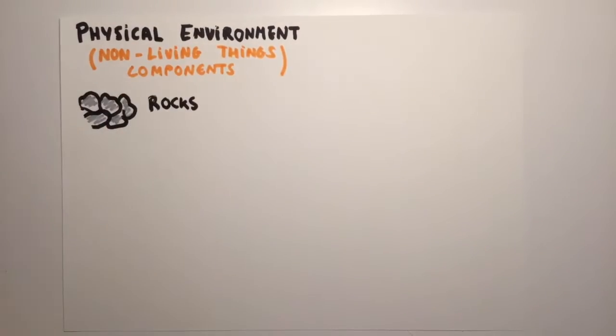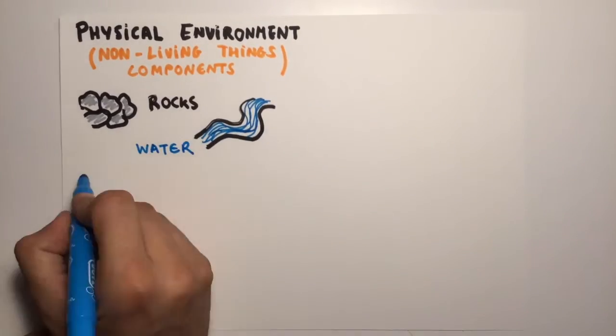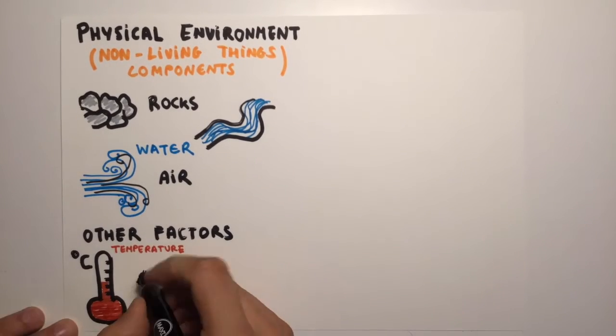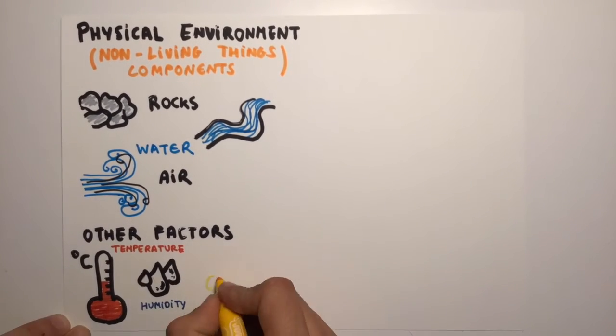The physical environment is made up of the non-living components in an ecosystem. It includes non-living things, such as rocks, water, or air.